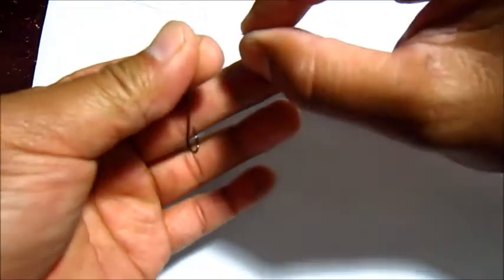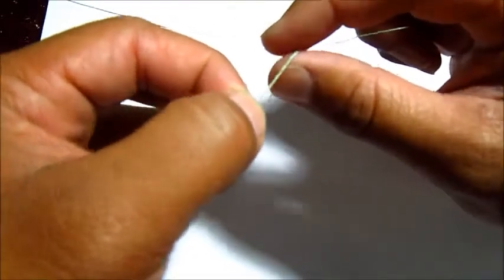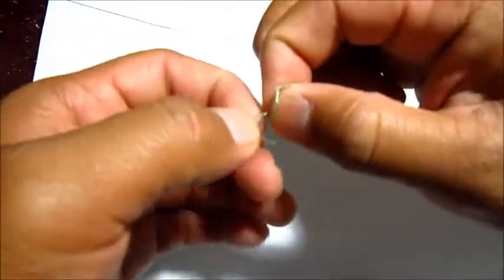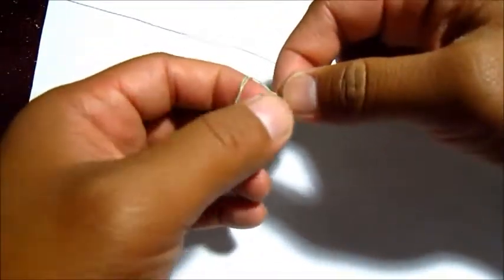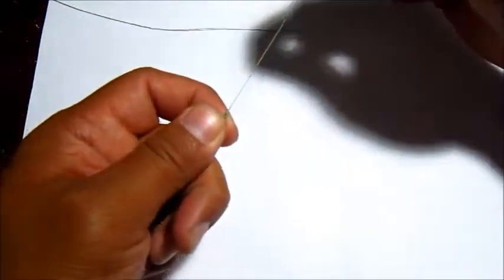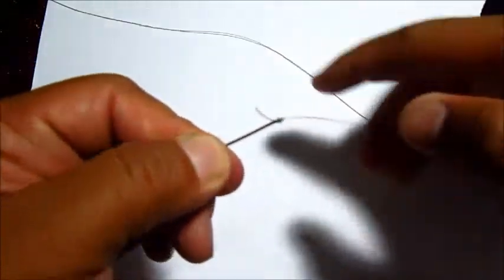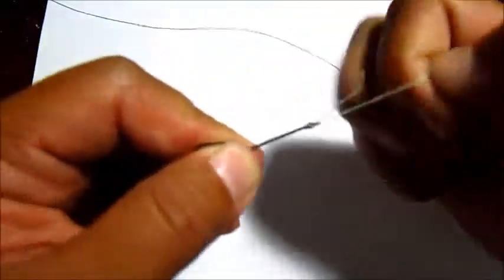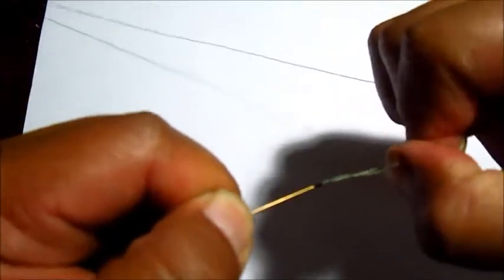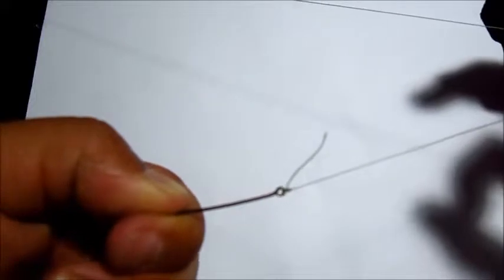You're going to come down on this loop right here, and then come back up into this loop that you went down on. Cinch it down like that and just pull. That is the Improved Fisherman's Knot.